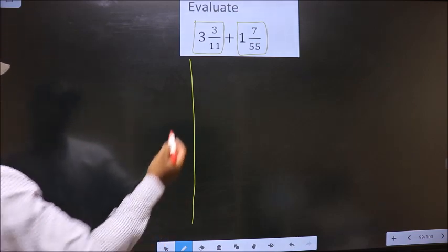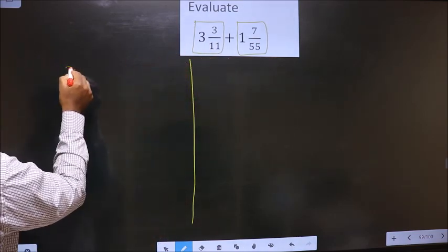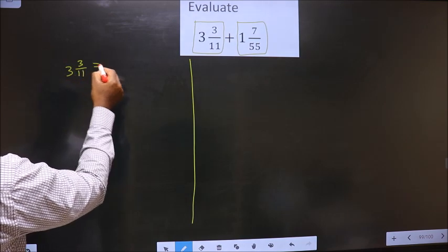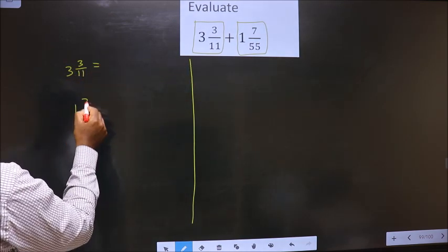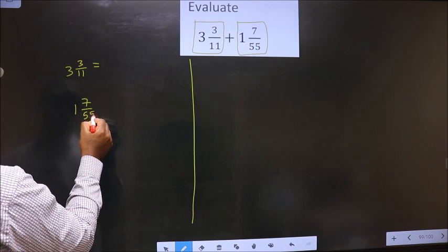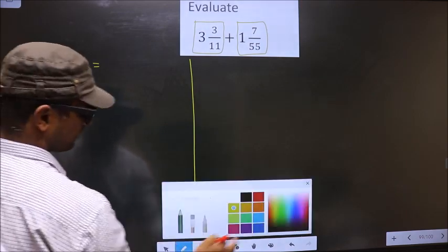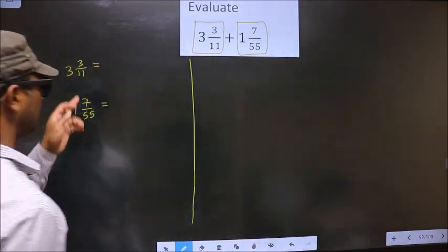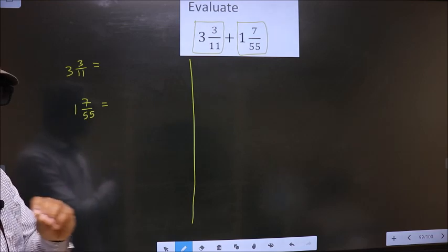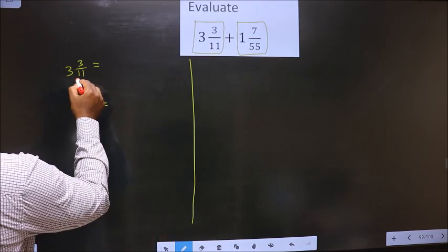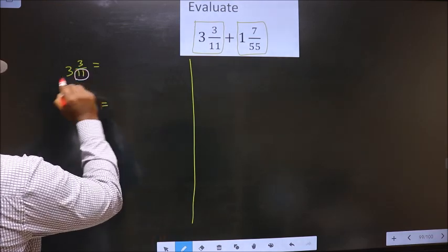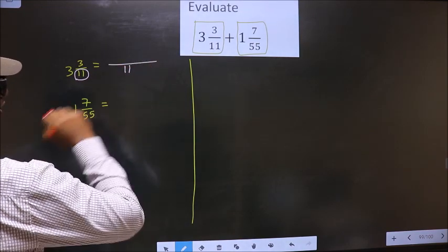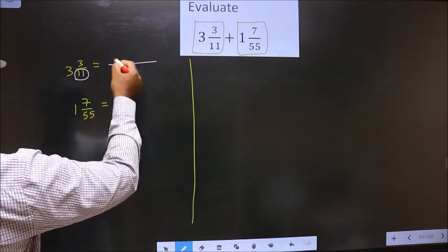So, the given mixed fractions are 3 3/11 and 1 7/55. How do we convert to improper? Here the denominator is 11, so here also you write 11 in the denominator. In the numerator, we should multiply these two numbers.